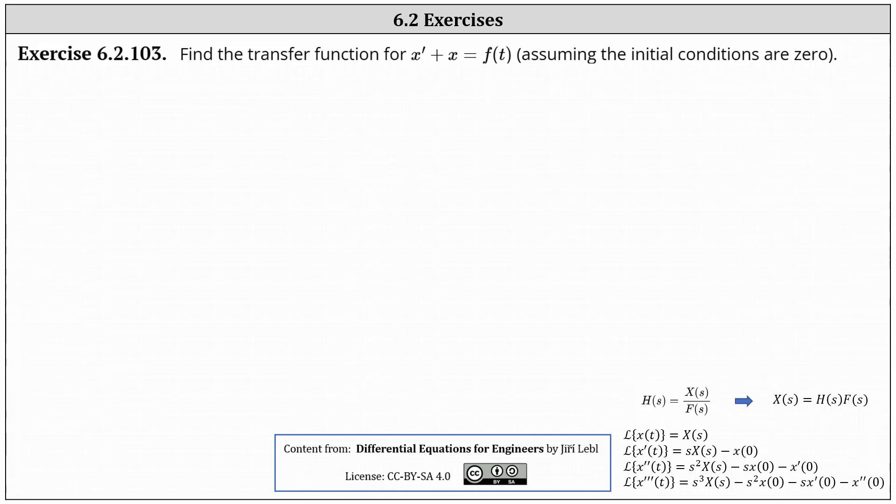We're asked to find the transfer function for x prime plus x equals f of t, assuming the initial conditions are zero. Recall the transfer function is big H of s, which is equal to big X of s divided by big F of s.